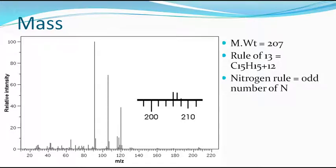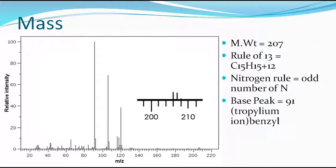If you see the nitrogen rule, there may be an odd number of nitrogen present in the molecule. The base peak is at 91, that means there is a possibility of a tropylium ion — that is, a benzyl group is possible, which we can consider.